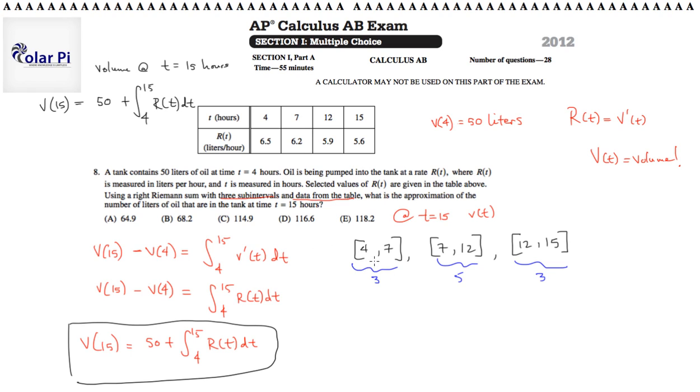Because we're using right Riemann sums, on each of the intervals, we'd use the value on the right end. So we'd use the value of r(t) at 7, at 12, and at 15 in our computation. That's going to be 3 times r(7) plus 5 times r(12) plus 3 times r(15), and all of this is to estimate the integral from 4 to 15 of r(t)dt.